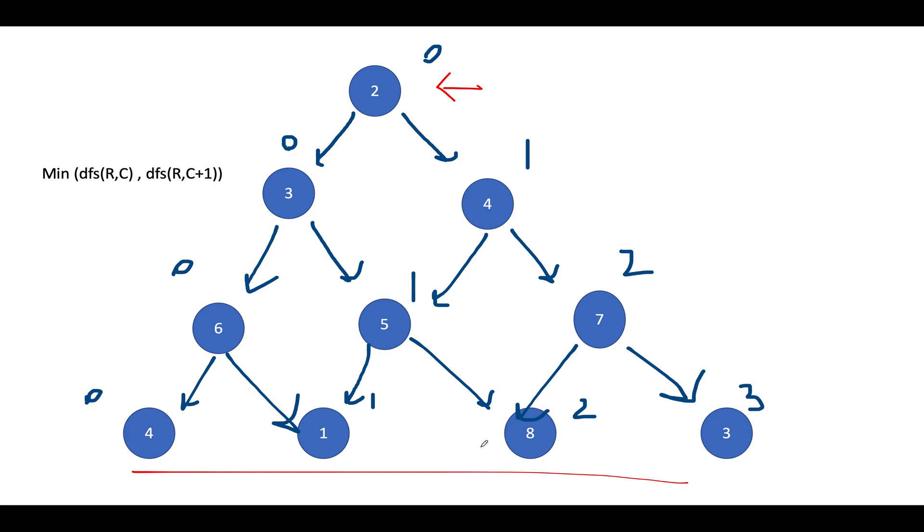What we need to do, we need to identify that particular path that leads to minimum sum and here in this example that path would be 2, 3, 5 and 1. Let's calculate the total sum of this path. This turns out to be 2 plus 3 is 5, 5 plus 5 is 10, 10 plus 1 is 11 which is in sync with our expectation. Now how are we making a decision to travel to which particular cell? As per the question for this particular cell, there are two options to go either the immediate lower one or to the next of it. So 3 and 4 are the two possibilities. For 3, 6 and 5 are two possibilities. For 6, 4 and 1 are two possibilities. For 5, 1 and 8 are two possibilities. For 7, 8 and 3 are two possibilities. For 4, 5 and 7 are two possibilities.